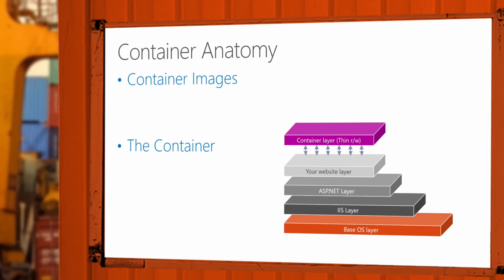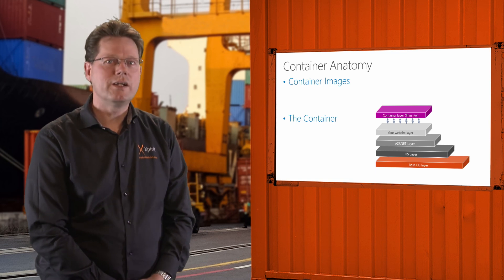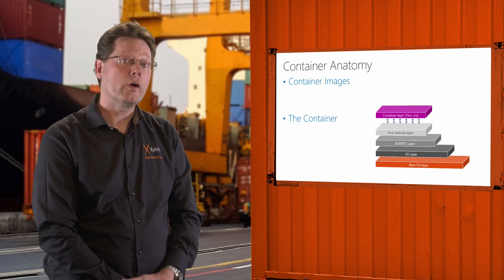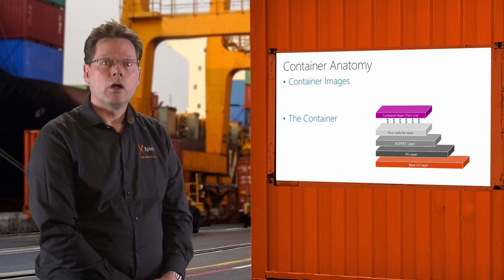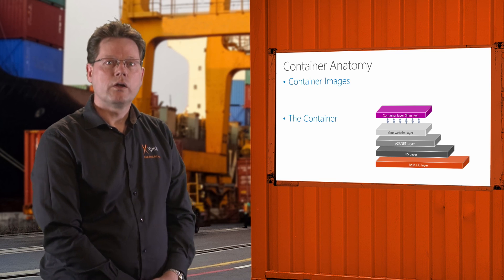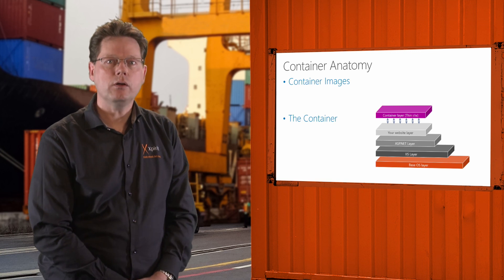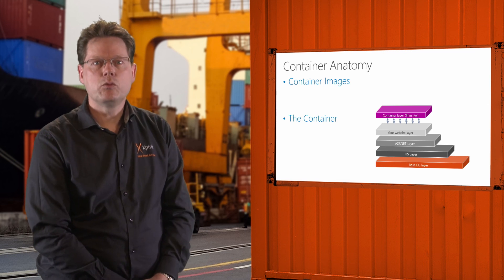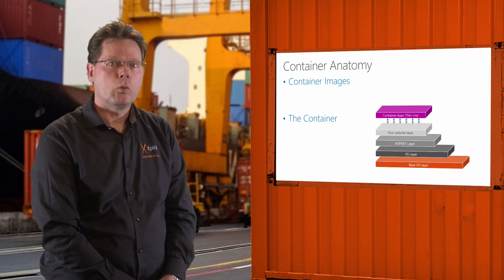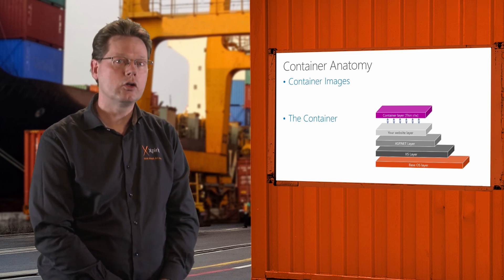The container is a running instance of an image. This means that the operating system adds a very thin read-write layer on top of the container image. When you stop a container and create a new one based on the same image, you always have a clean state and never pick up any changes you don't want. After stopping, you decide if you want to capture the layer or discard it. An image is immutable after it has been committed — once you create an image, you cannot change it. Changing always means adding a new layer.